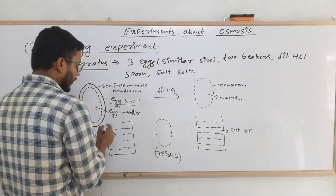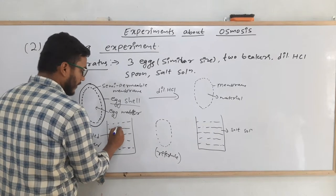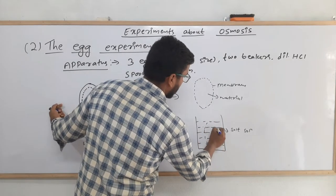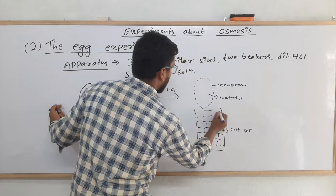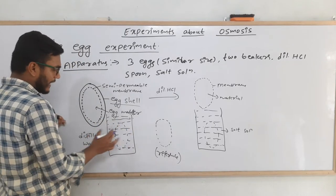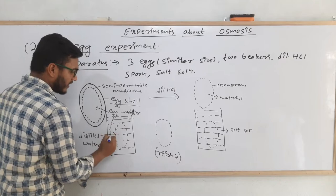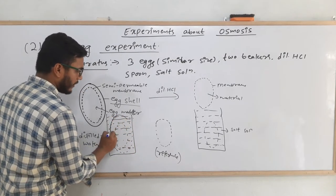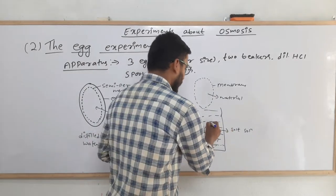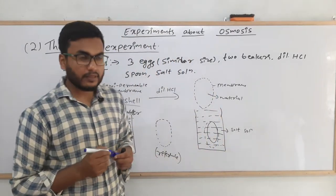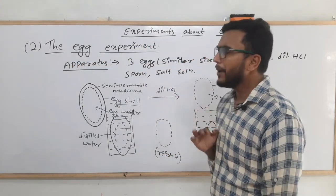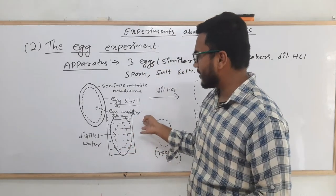We place the remaining two eggs in the beakers. Initially the size of both eggs is the same. But after some time, the egg placed in distilled water starts to swell — its size increases and becomes bigger. The egg kept in salt solution shrinks — its size decreases. This is the experimental observation we observe in the laboratory.